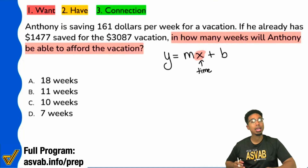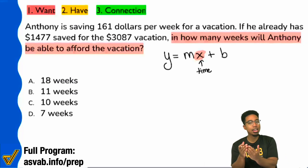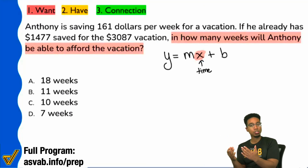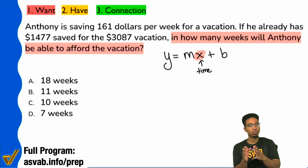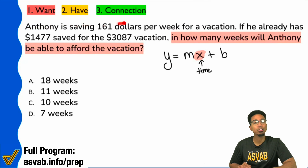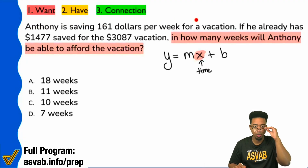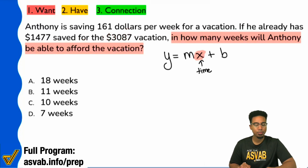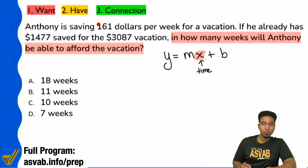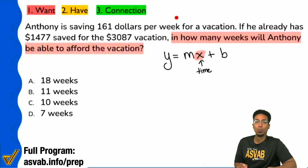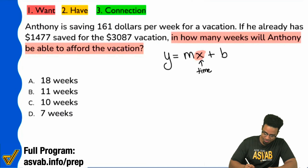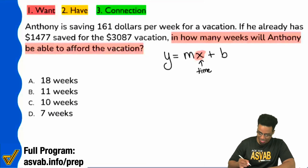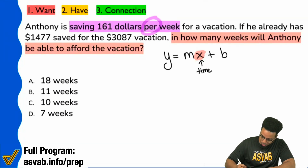Next up, we're going to go ahead and analyze the information. Everybody, if we're looking for time, it's very likely that the problem is going to give us the rest of the information. Let's read through and understand where each piece goes. Right over here: Anthony is saving $161 per week for a vacation. Per week — that's our M, that's our rate. Saving $161 per week is absolutely our rate. We can go ahead and identify that right here: $161.